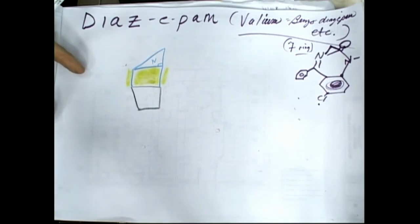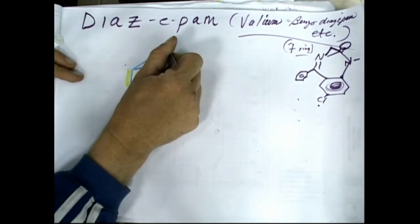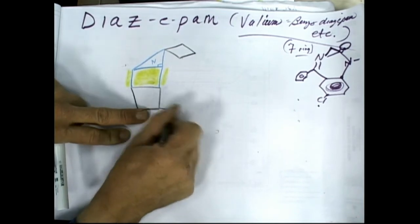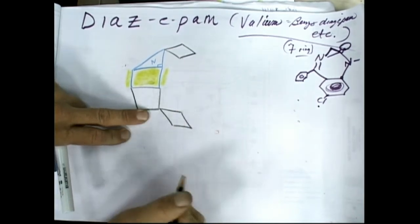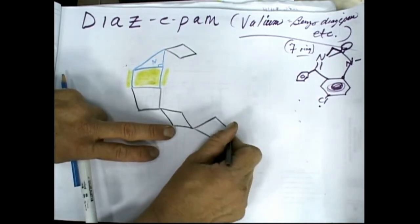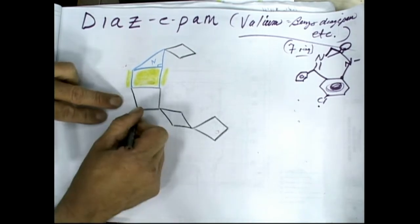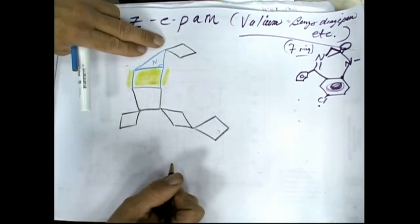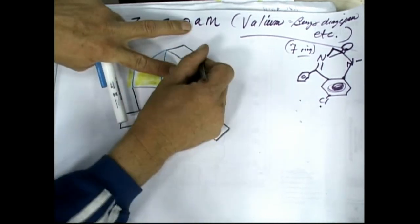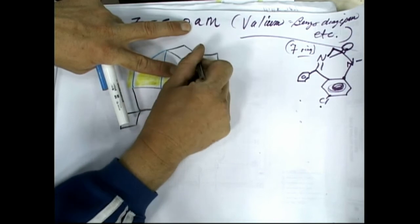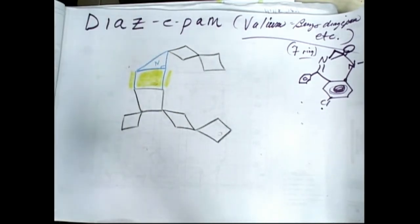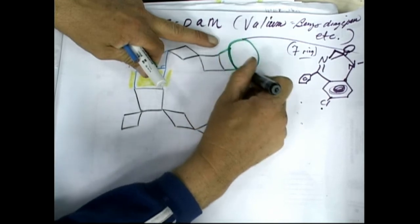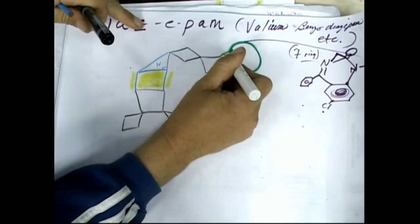We got a nitrogen up here that goes to a carbon — just a simple diamond. This carbon here is going to run on to another carbon, and that's going to get another carbon that's going to be part of the benzene ring. So off here we got a benzene ring. We got nitrogen to a carbon to a carbon that's going to have a double-bonded O on it. Give the O its due — big O, double bond.